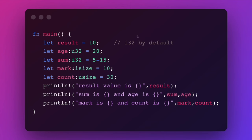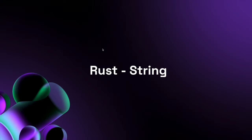We can manually specify the data types of a variable when defining it. All of the standard variable types we know from other programming languages are available — signed and unsigned integers, floating point types, booleans, characters, and strings. We'll be talking specifically about strings a little bit later.